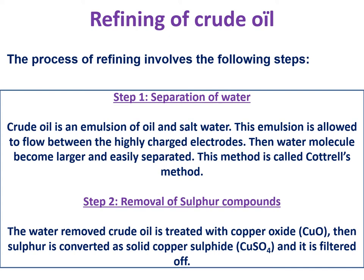To remove water, you need to pass the emulsion through highly charged electrodes. When passed through the highly charged electrodes, water molecules attract each other and become larger. When the water molecule size becomes bigger, they form a separate layer from the oil, and you can then separate the water and oil by a normal process. This process of removing water from crude oil is called Cottrell's method.